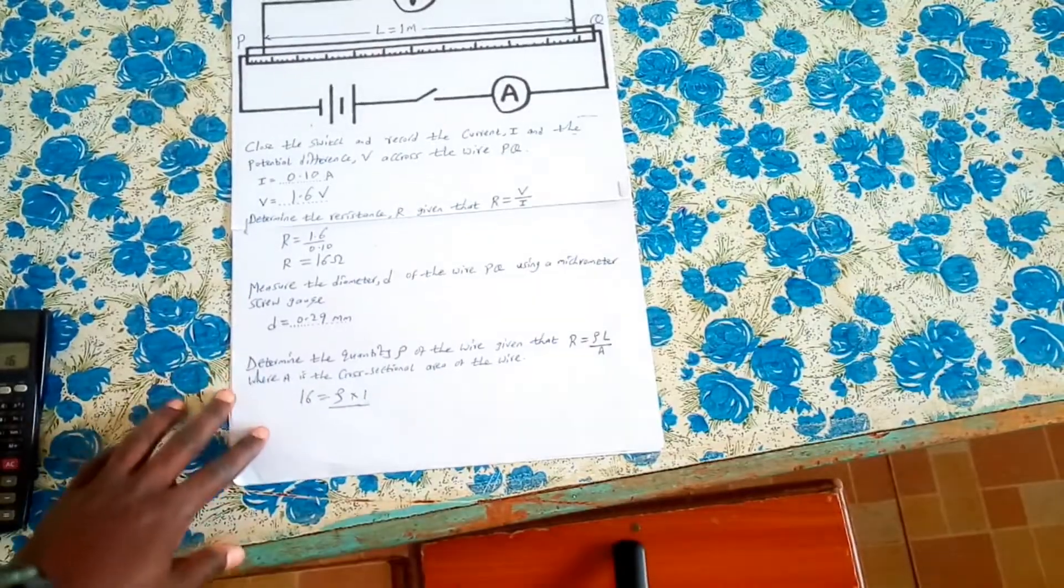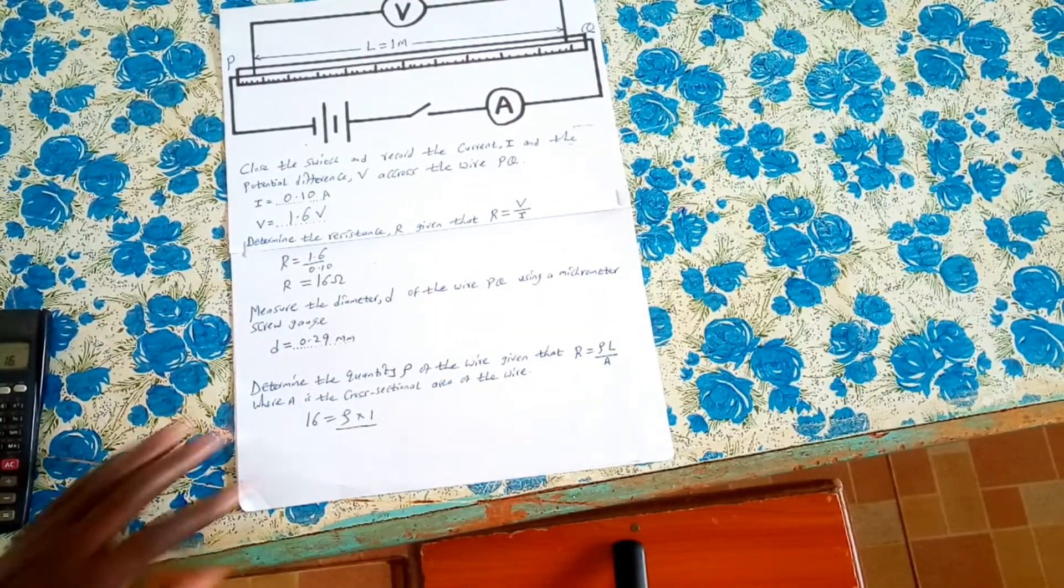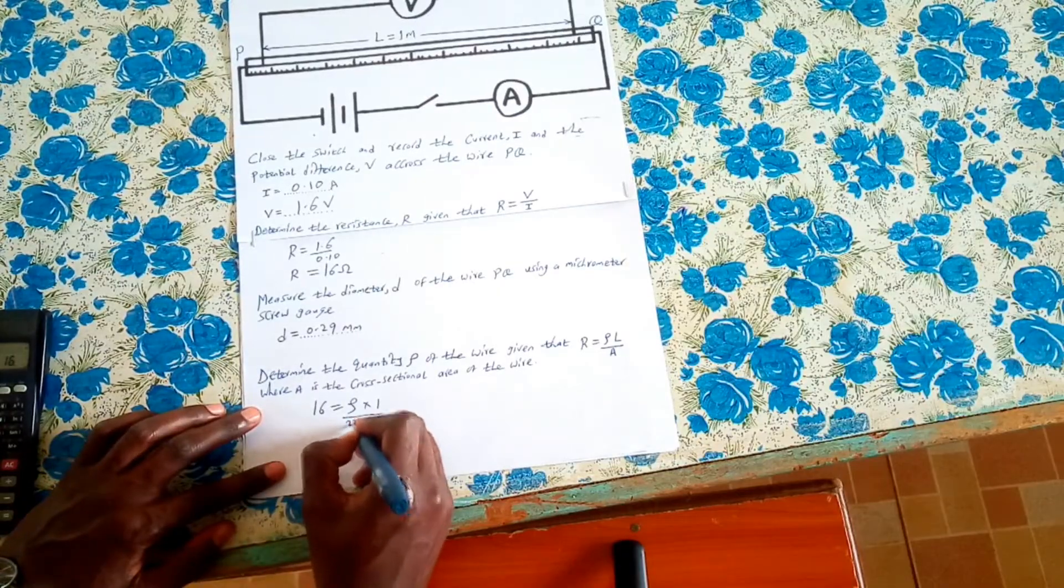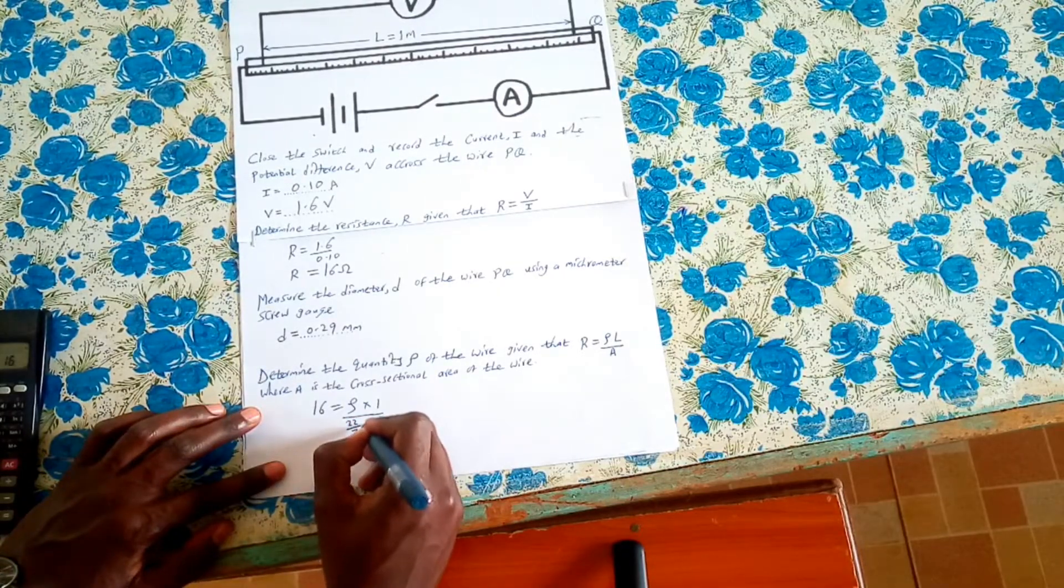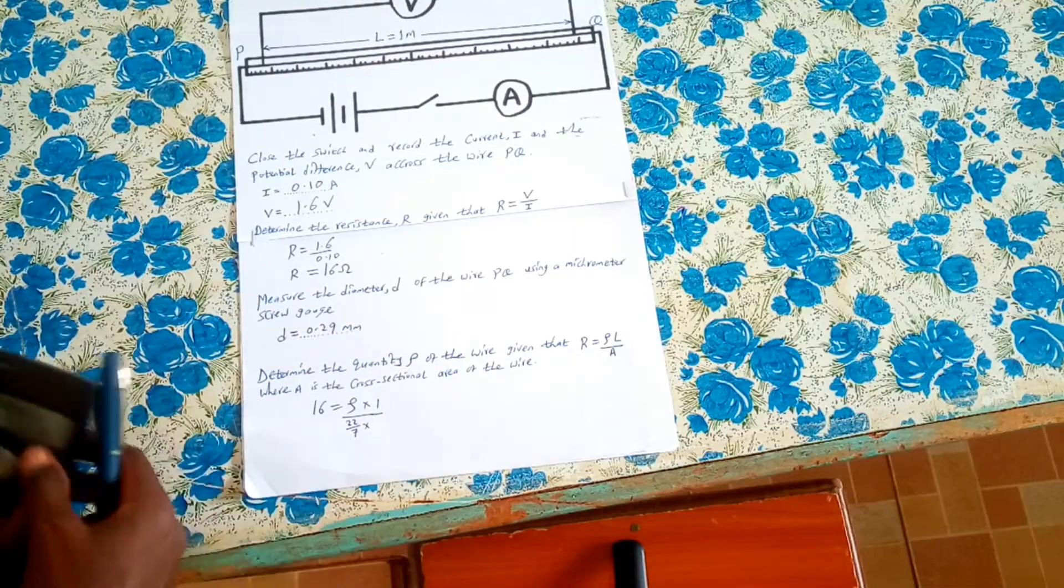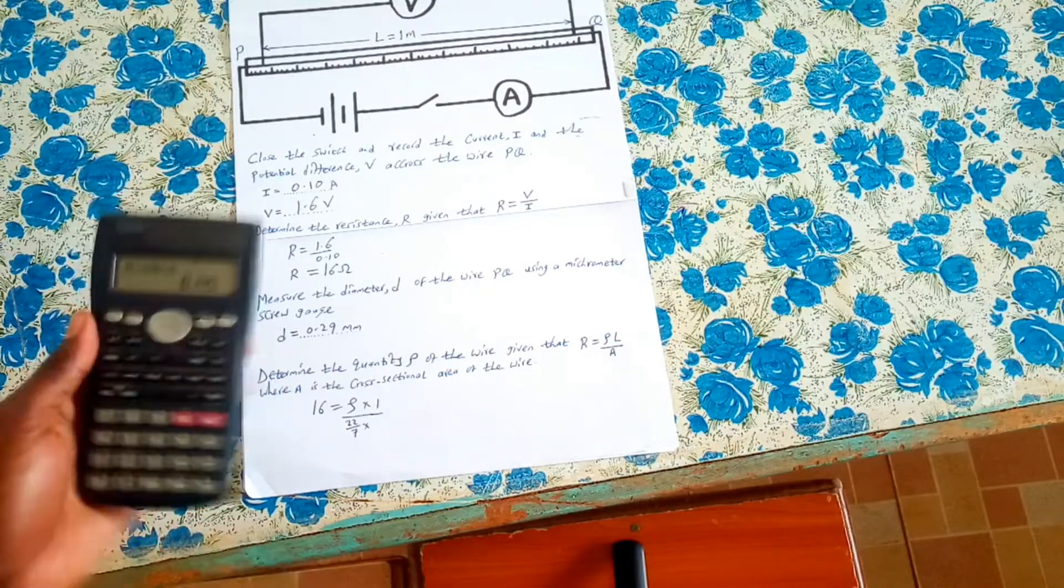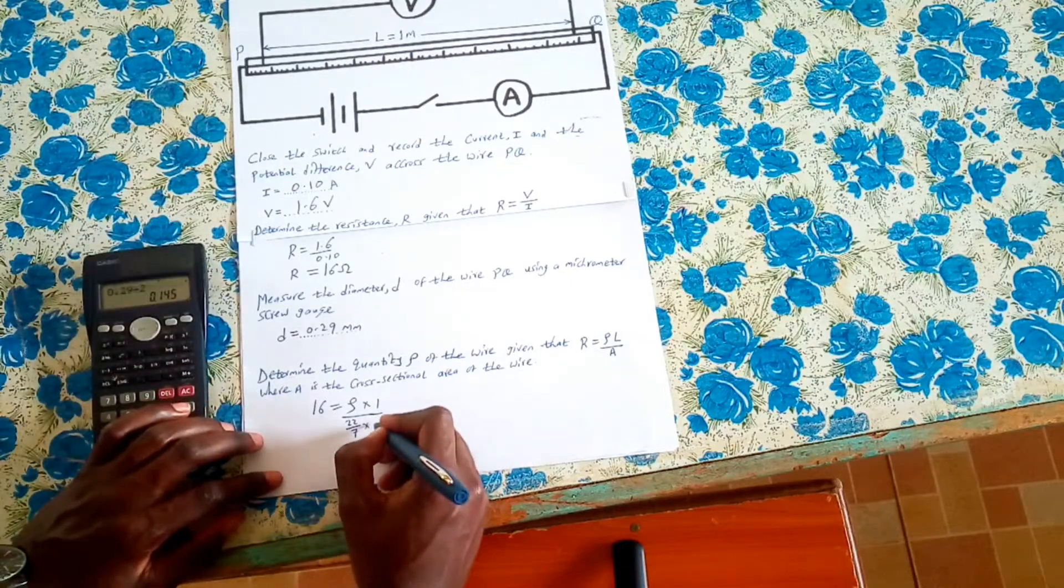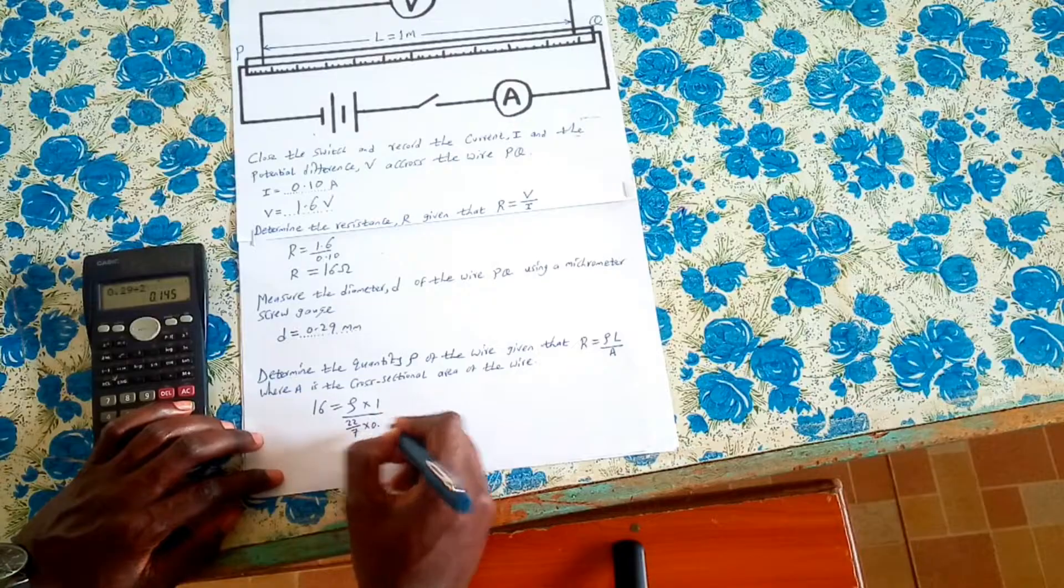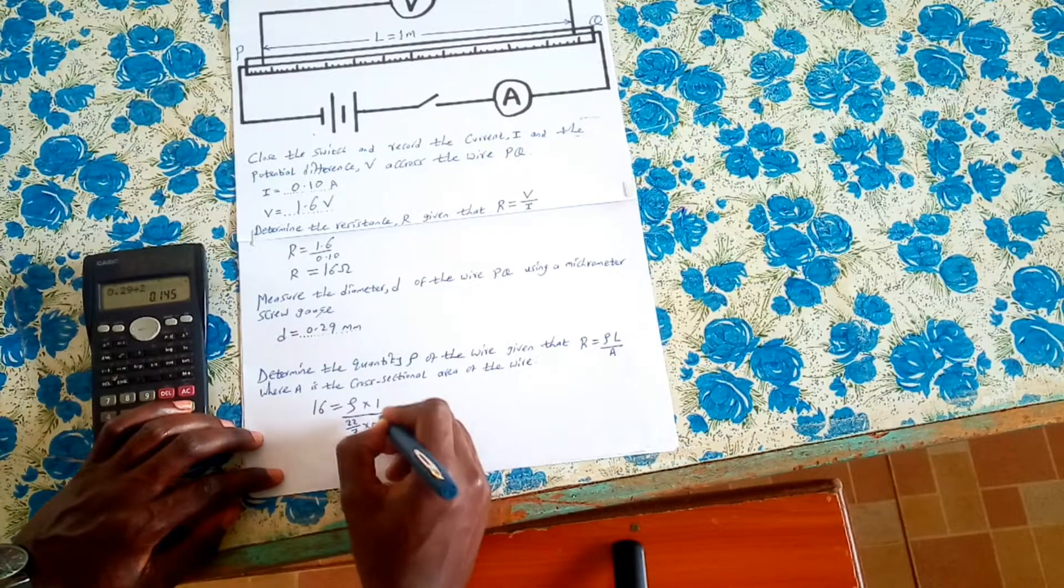And that means it will be 22 divided by 7 times, if diameter is 0.29, then radius will be 0.29 divided by 2, which is 0.145.